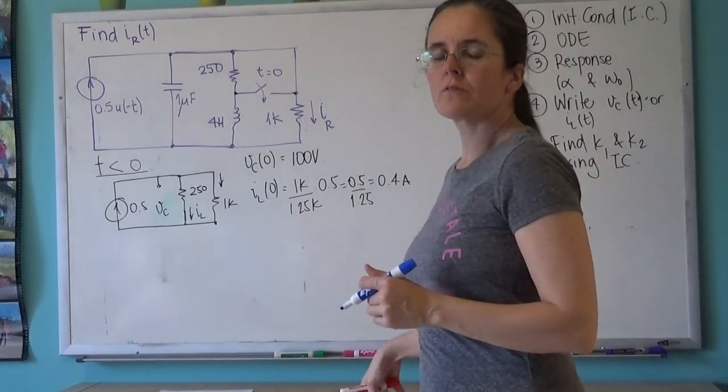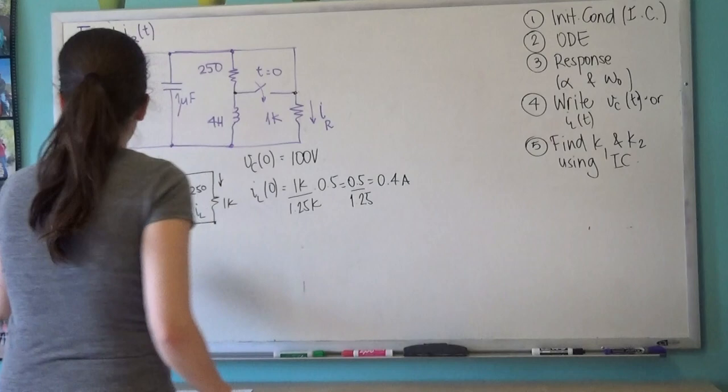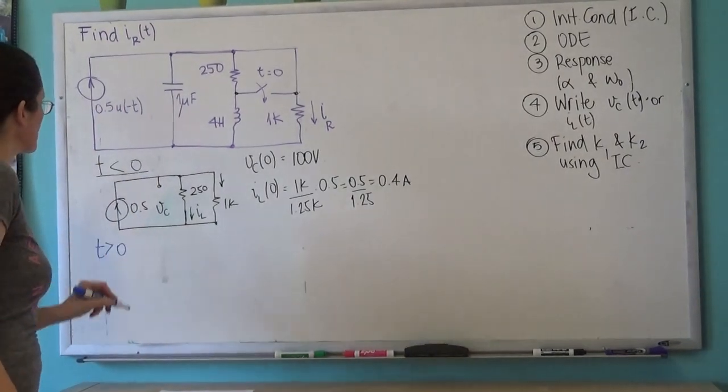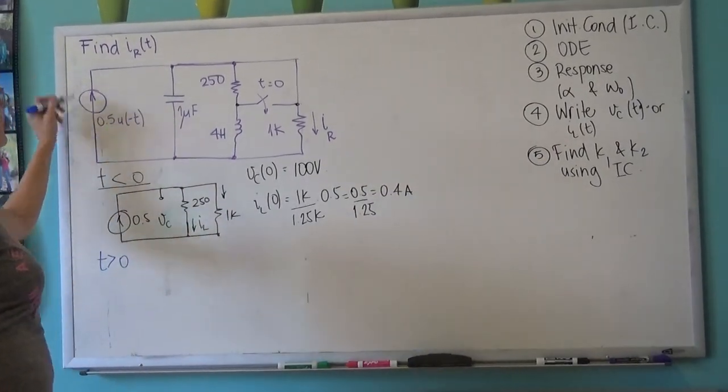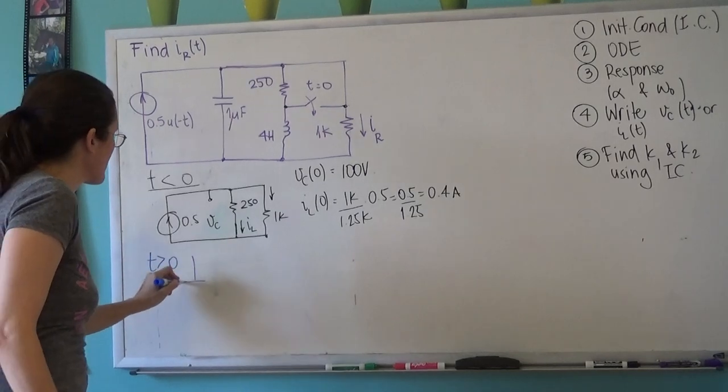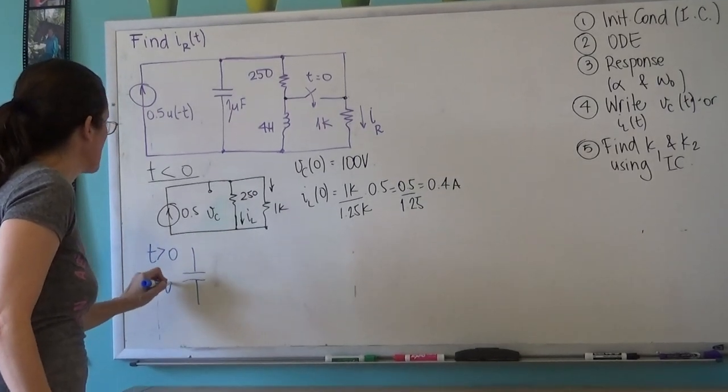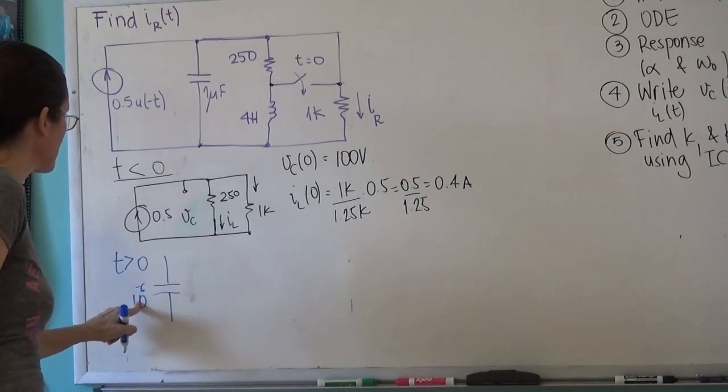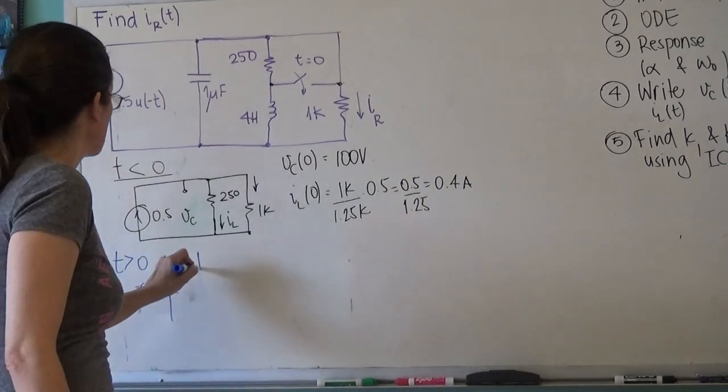Okay, so we're interested in the rest of the initial conditions in the circuit. Changes for T larger than zero: what happens is this gets out of the way, so I only have the one microfarad capacitor, the 250 ohm resistor, and the inductor.